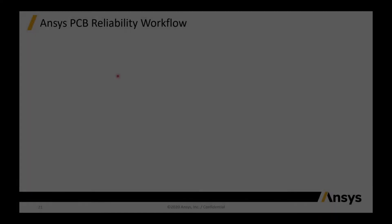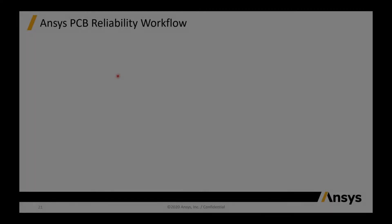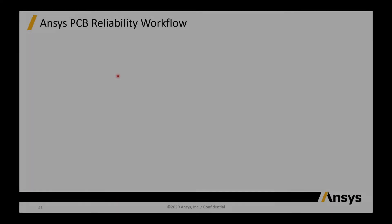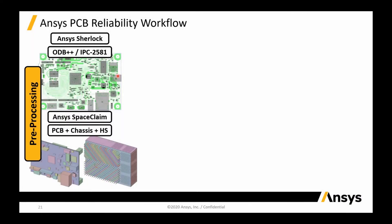Here I want to talk about our full PCB reliability workflow. We start with Sherlock where we import the ECAD file. That's going to give us the trace layout and component information. We can then export that geometry over to SpaceClaim where we'll integrate it with the MCAD files that contain the chassis, heat sinks, fans, and so on.